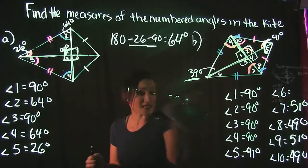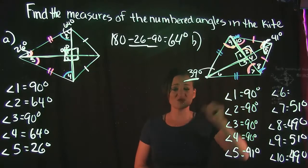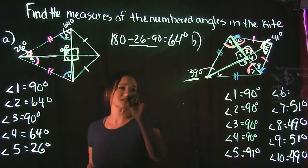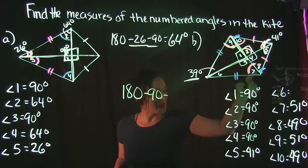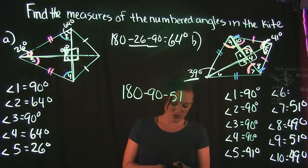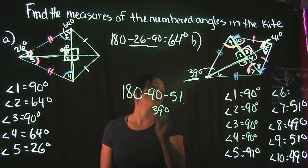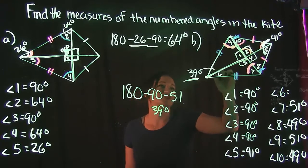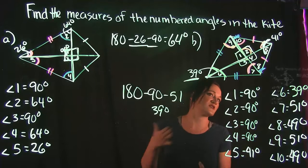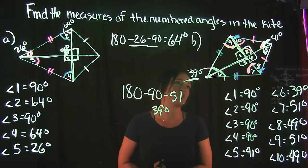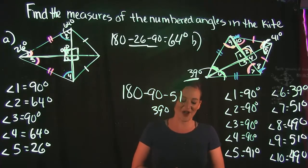The only thing missing now is angle 6. Using angle 3 (90°) and angle 7 (51°): 180 − 90 − 51 = 39°. So angle 6 is 39°. We could have also just noticed it matches the given 39° angle from the congruent triangle, but sometimes you get caught up just working the problem.